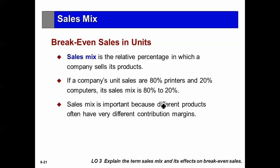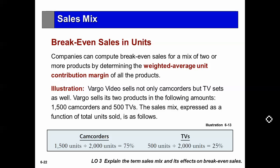Now we introduce sales mix. We've been talking about break-even as if the company has only one product, but many companies have many different products. They know their sales mix — for every one of these, they sell three of that, and so on. Sales mix is the relative percentage: if a company's unit sales are 80% printers and 20% computers, its sales mix is 80-20. Sales mix is important because different products have different contribution margins. We weight the sales mix with the contribution margin for each product to come up with a weighted average unit contribution margin.